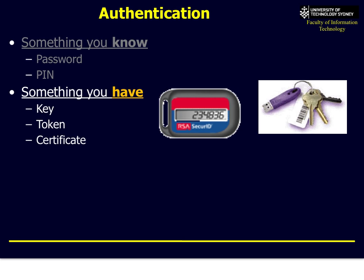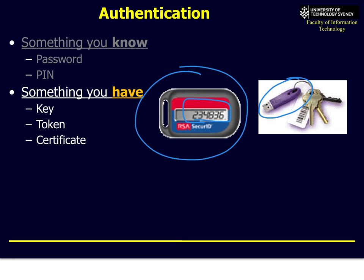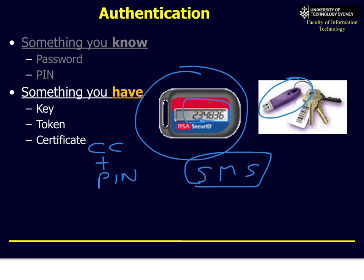Authentication can also use something you have. An RSA SecureID is a physical token where the numbers change every minute, synchronised with your server — you log on with a password and then type in the current code, such as 1234836. It could also be a USB key token or a PIN card like your credit card — that's a physical object you have, combined with a PIN code for two-factor authentication. Another increasingly popular method is SMS: Gmail's two-factor authentication sends a magic code to your phone, and you type it in — much more secure, since you can't receive it from Nigeria if your phone is in Sydney.